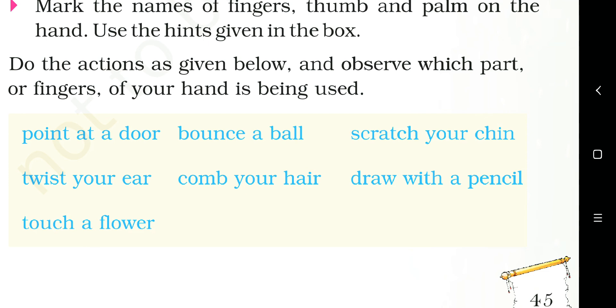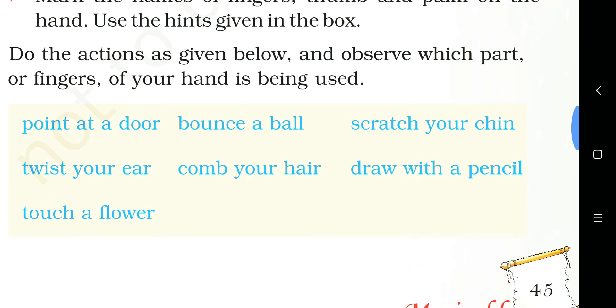You can write this on your own how you bounce a ball. Next, scratch your chin. So some people scratch their chin with one finger, or maybe some with two fingers. I scratch my chin with forefinger. You can write it on your own. It's a very easy exercise - you can do all these actions on your own and then observe which fingers or which parts of your hand you are using.